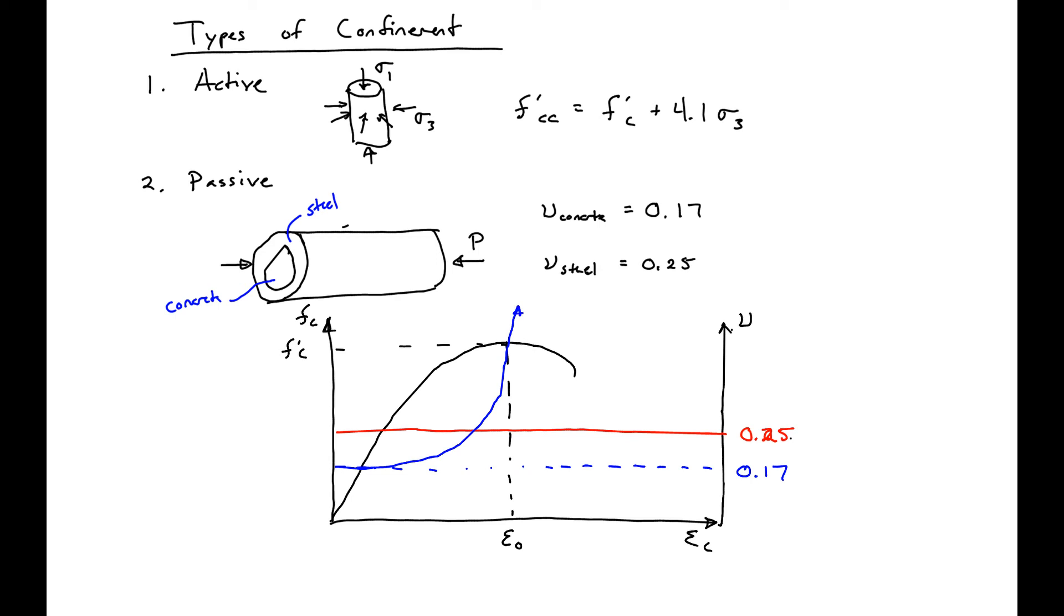And you can see that the confinement is going to start to have an effect when the Poisson ratio of concrete surpasses that of steel. So this is when passive confinement kicks in.